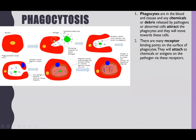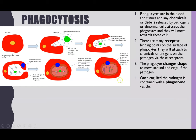Within the phagocyte we can see there are receptors, and these receptors can bind to the pathogen. They will attach to the chemicals or antigens on the pathogen via those receptors. The phagocyte will then change shape and we can see it moving around to engulf that pathogen. Once engulfed, the pathogen is then contained within a phagosome vesicle. We call this vesicle a phagosome — so it's now contained.